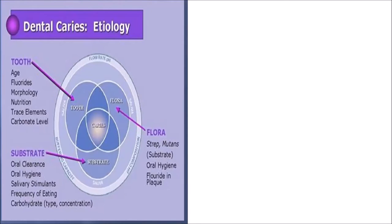We have what we call the dental triad or the caries triad. The first is the tooth, which forms a part of the triad. The age of the tooth, the fluoride content on the tooth, the morphology of the tooth, the nutrition when the tooth was forming, the trace elements, and the carbonate level actually decide the strength of the enamel.